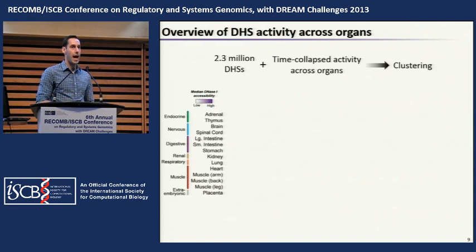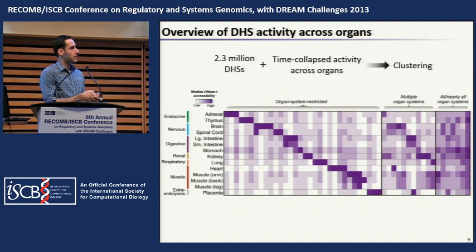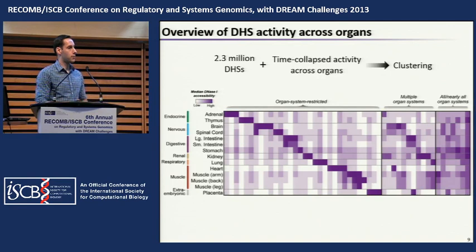We collapsed the temporal aspect of the data to ask how regulatory elements vary in activity across these 12 different organs, arranged anatomically into their organ systems — for example endocrine tissue, nervous tissue, digestive muscle, etc. We performed a clustering analysis represented by a heat map, where each column is a set of DHSs placed into a cluster, displaying the median DNase 1 sensitivity in purple shading. There are a large number of clusters which are organ- or organ-system-restricted.